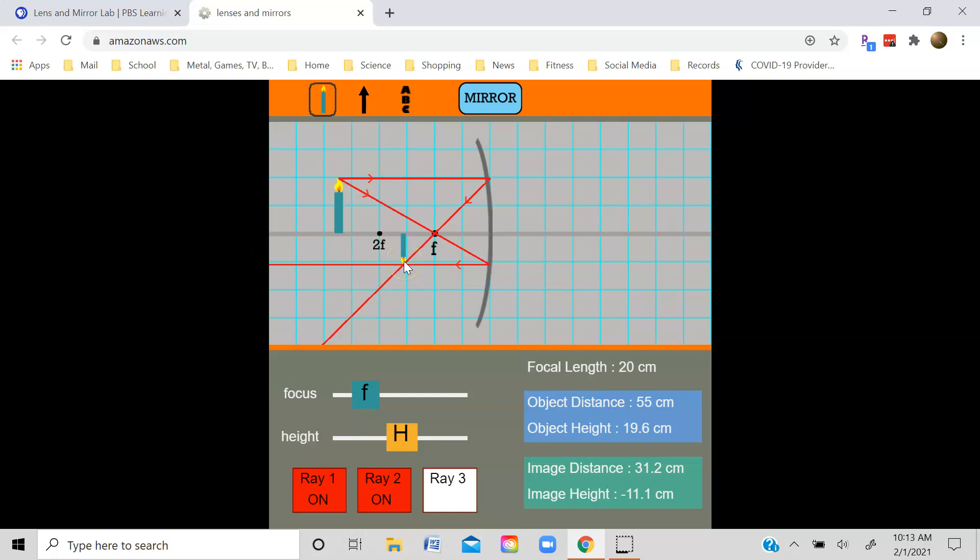And then right here, of course, is the real inverted image that forms in front of the mirror. Let me draw in a third light ray. That goes from the tip of the object here down to the center of the mirror. And it then reflects at the same angle from the law of reflection. Reflected light ray, of course, passes through the image.